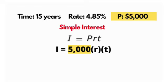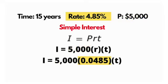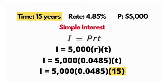Principle times rate - and we have to change that rate by dividing by 100. So 4.85% divided by 100 is 0.0485, and then multiply it by the time. Our time will be 15 years.